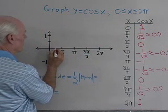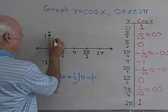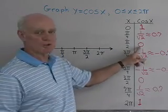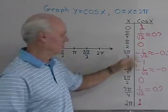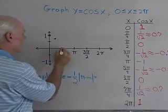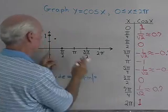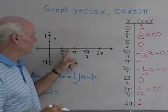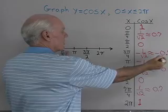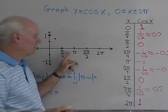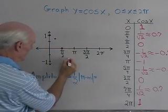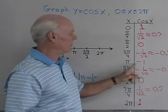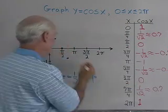At pi over four, I'll go up to about 0.7. At pi over two, cosine is zero, so when x is pi over two, y is zero. When I get to three pi over four — three-fourths of pi — that's halfway between pi over two and pi on the x-axis, and I'll get negative 0.7. When x is pi, cosine of pi is negative one, so I have the point (pi, -1).